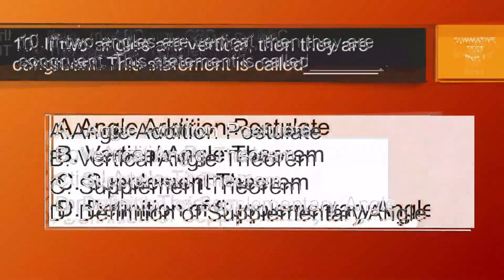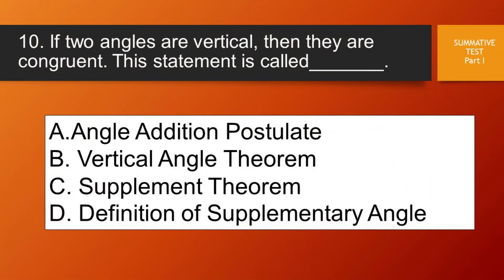Question number 10. If two angles are vertical, then they are congruent. This statement is called blank. Letter A, angle addition postulate. Letter B, vertical angle theorem. Letter C, supplement theorem, or letter D, definition of supplementary angle.